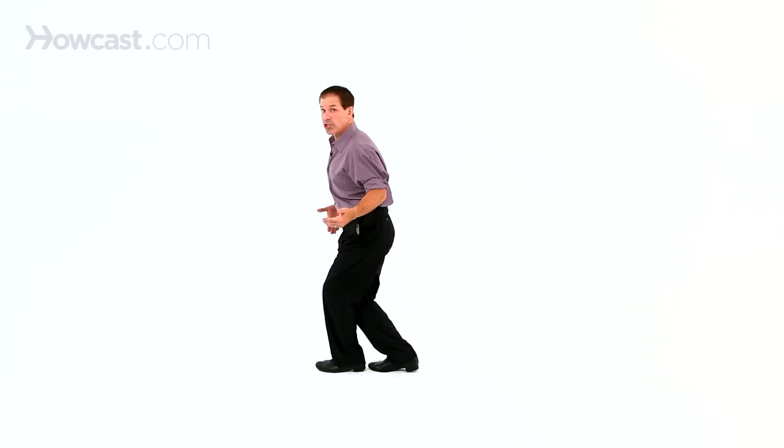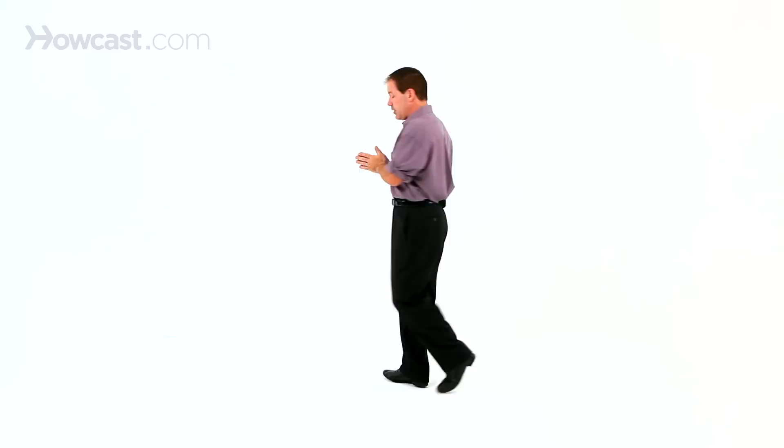Now if you look from the side, I want to be kind of over my feet a little bit. So as I go kick, ball, change, I'm over my feet as my knees fold both to the same direction. So again, practice your kick, ball, change. Practice your walk. Put your knees together so they go side to side. And you combine the three things. Kick, ball, change, walking, keeping your knees together. Looks like this.